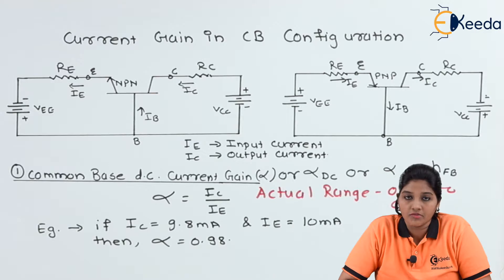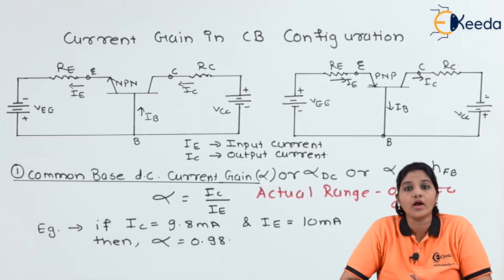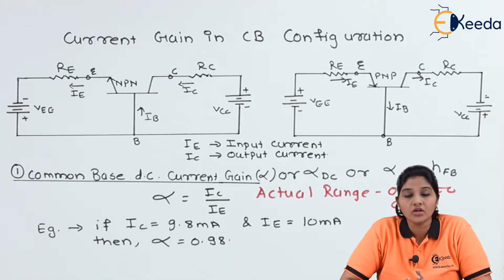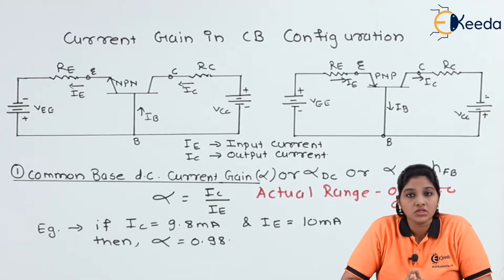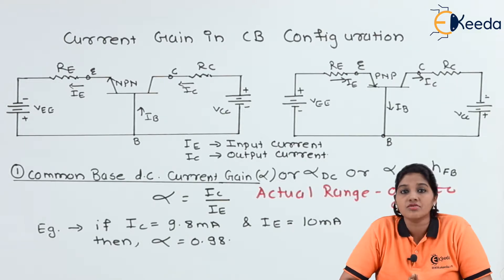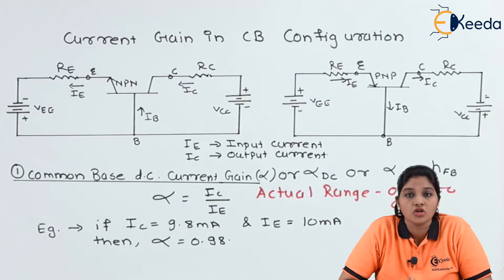A transistor is a three-terminal device — emitter, base, and collector. For connecting a transistor in any circuit, one terminal is considered as a common terminal. In this case, we are going to consider the base terminal as the common terminal and see what are the current gains in common base configuration. Let's first look at the diagram.